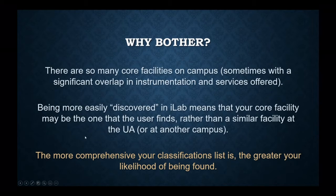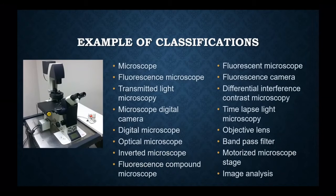So why bother? There are a lot of cores on campus and some of them have a fairly significant overlap in instrumentation and services. If your core happens to be the one that's more easy to discover, that may mean you'll end up with a few more users finding your facility rather than going to a similar facility on campus. Or if they find neither your facility nor the other one, they may go somewhere else to another campus, because iLab allows you to look more broadly beyond just our particular campus. So the more comprehensive your classification list is, the greater your chance of being found.